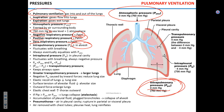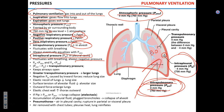The second pressure is called intrapleural pressure — the pressure in the pleural cavity. It is always negative, meaning it is always lower than atmospheric pressure and lower than intrapulmonary pressure. Because the pressure inside the lung (zero) is higher than the pressure in the pleural cavity (negative four), the lung stays inflated.